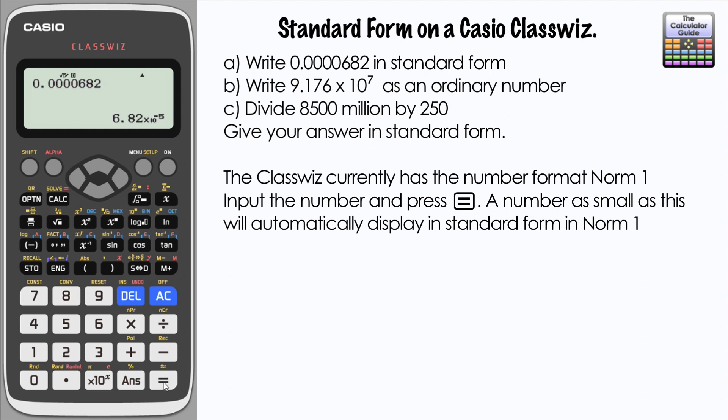Let's input the number: 0.0000682 and press equals. Because we're in norm 1, straight away it's given the answer in standard form: 6.82 times 10 to the minus 5.